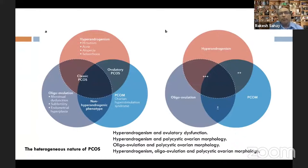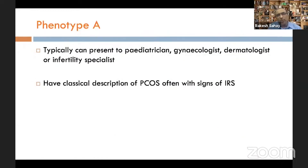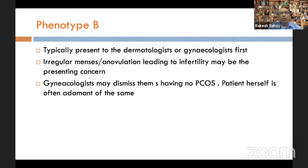The heterogeneous nature of PCOS is depicted with a significant overlap between these phenotype groups across the three components — hyperandrogenemia, oligo-anovulation, and PCO morphology. Phenotype A typically presents to the pediatrician, gynecologist, dermatologist, or infertility specialist, with a classic description of PCOS and often significant signs of insulin resistance. Phenotype B typically presents to the dermatologist or gynecologist first, with irregular menses or anovulation leading to infertility.